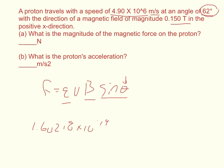So you simply take the 1.60218 times 10 to the negative 19th times 4.9 times 10 to the 6th times 0.15 tesla times the sine of 62 degrees. And you should get a force that's equal to 1.039 times 10 to the negative 13 newtons.